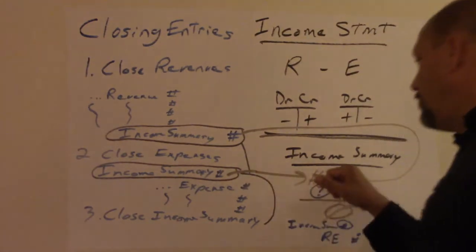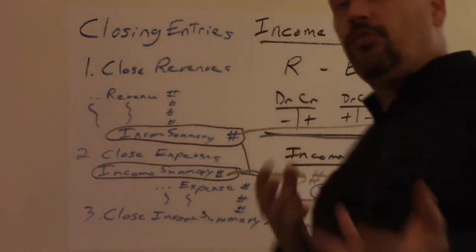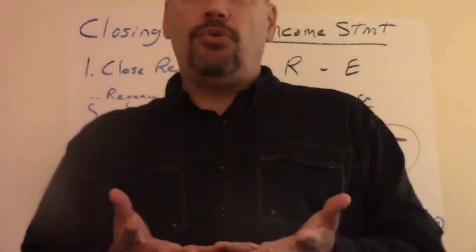And you close out cost of goods sold all to income summary. So the income summary is now debited for that balance. So you have two numbers here. The difference is we don't know which one's bigger. Or when you do it, you do know. But this is a hypothetical.